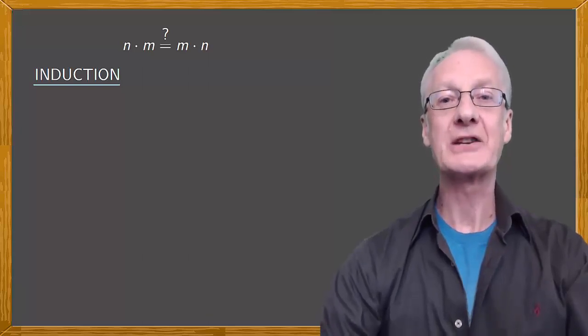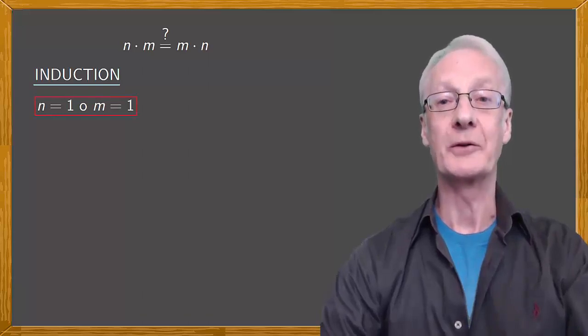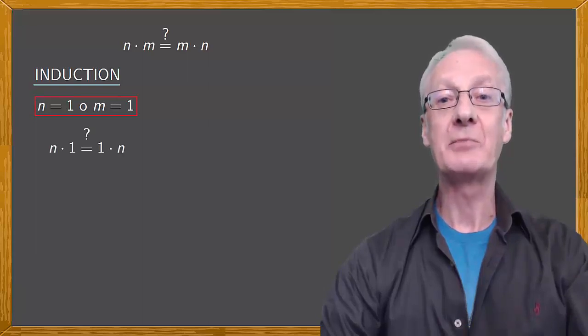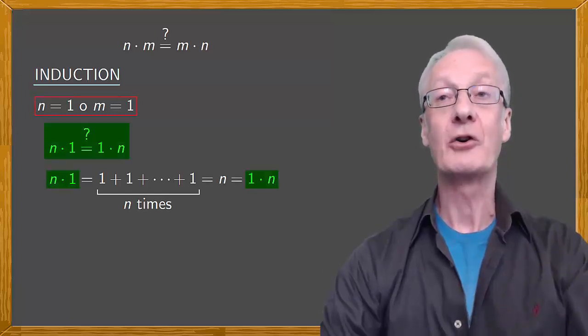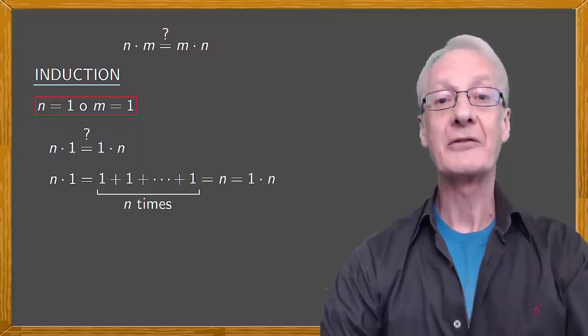Let's start with the case where either n is 1 or m is 1. For example, if m equals 1, we have that n multiplied by 1 is equal to 1 multiplied by n. On one side, we have n times 1. And of course, if you add 1 to itself n times, then the result is n, which is 1 times n. Or if you prefer, the equality comes straight from the fact that 1 is the neutral element of the product of natural numbers. So, we have that in the case where one of the factors is 1, the commutative rule for products holds true.